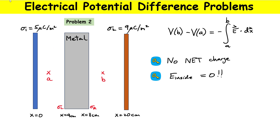Here's problem two. We're inserting a metal block. A couple of keys: the metal had no net charge — it was originally neutral. It has a thickness of two centimeters, so the left edge is nine centimeters away from the left plate and the right edge is nine centimeters from the right plate. We need to calculate the induced charge densities, sigma L on the left and sigma R on the right, which appear at the surface of the metal to satisfy the condition that the electric field inside a conductor must equal zero.